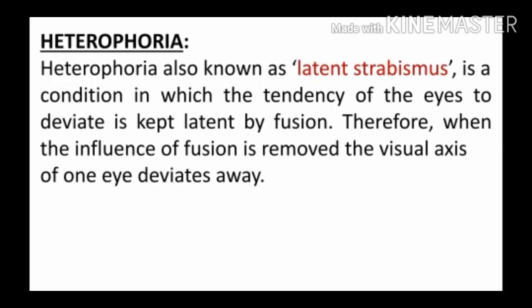Heterophoria, also known as latent strabismus, is a condition in which the tendency of the eyes to deviate is kept latent by fusion. Latent means hidden — not visible. In this condition, squint is present but its presence is only visible when we perform diagnostic tests such as the cover test. Heterophoria is not visible because fusion keeps the squint latent; if we break this fusion by any method, the squint becomes clearly visible.